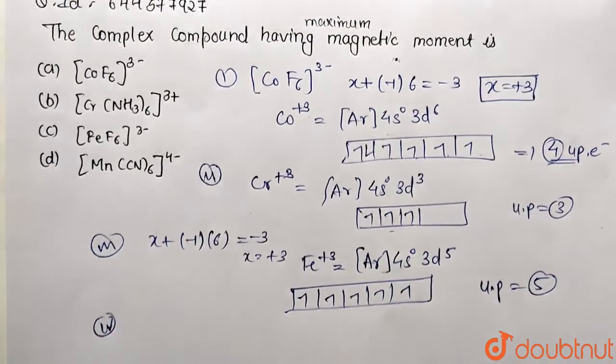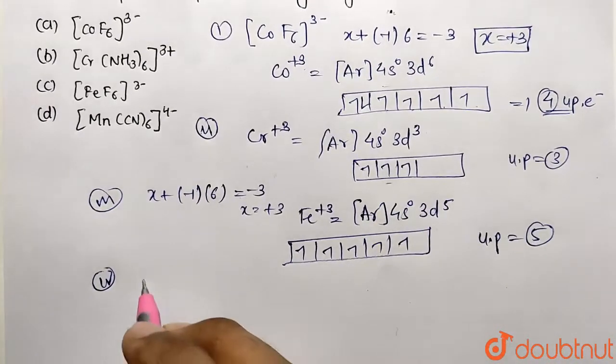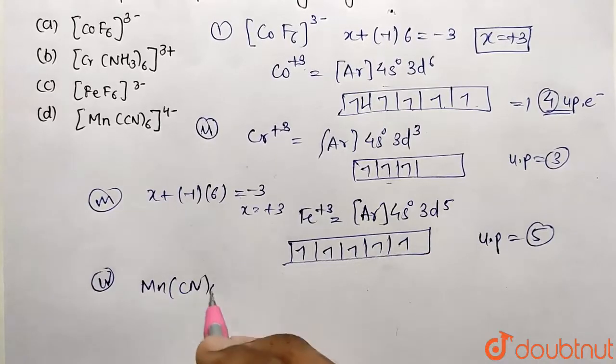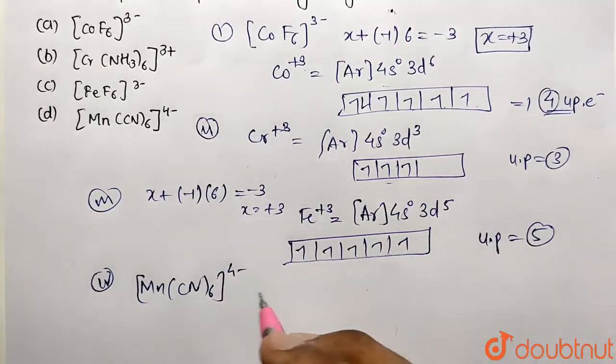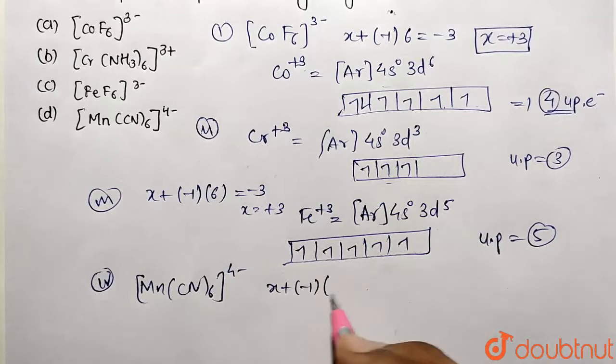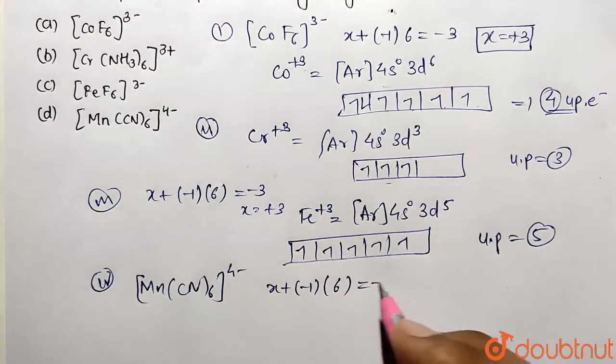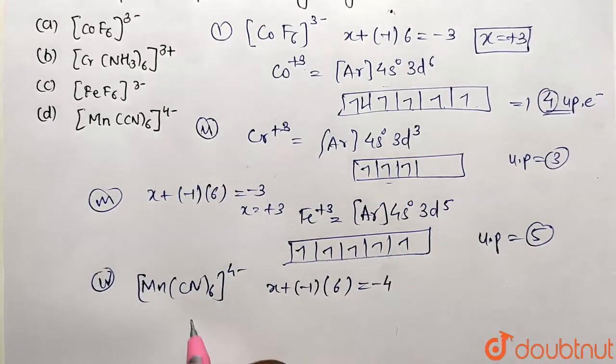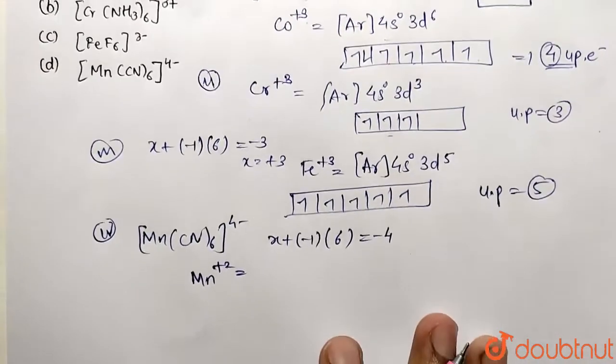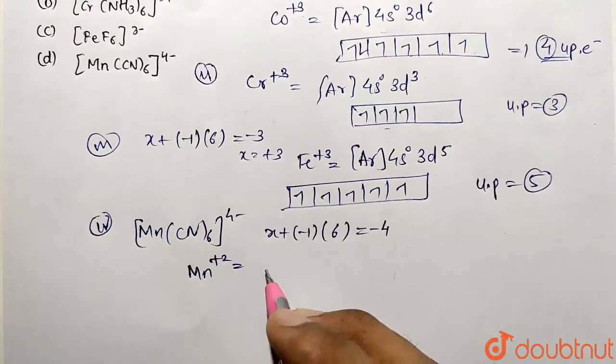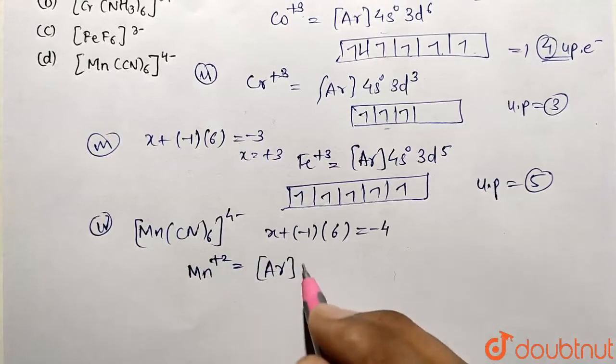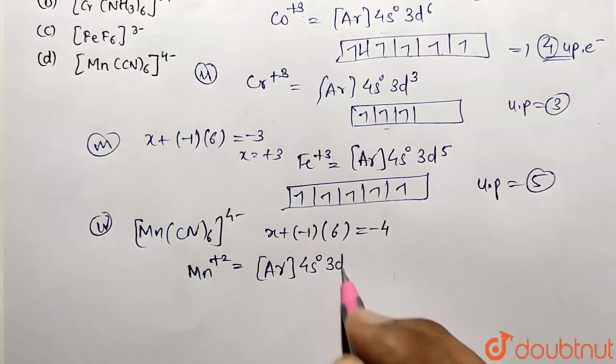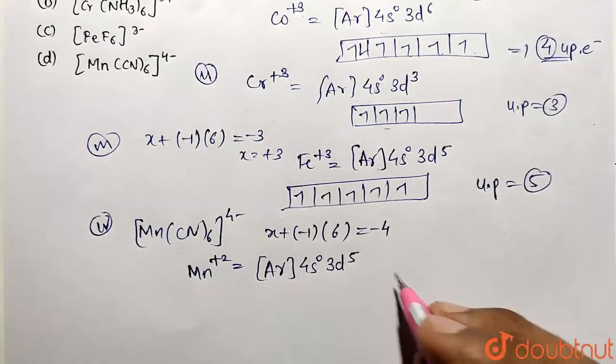Let's go with the fourth complex, [Mn(CN)6]⁴⁻. Calculate the oxidation state. Cyano is a negative ligand, so -1 multiplied by 6 equals -4. The value turns out to be positive 2. Can I write the configuration for manganese diapositive ion? It's argon, 4s will be 0, and we are left with only 3d⁵.